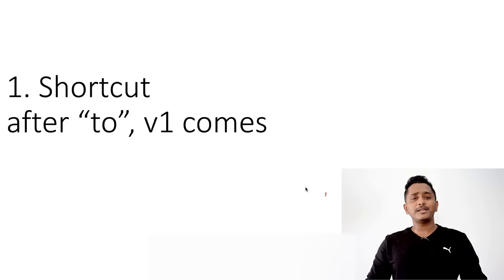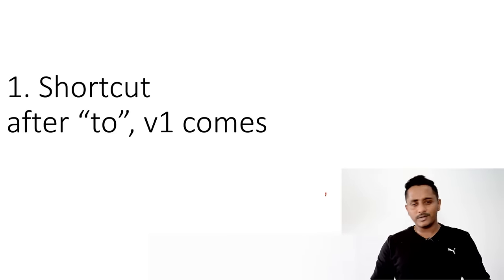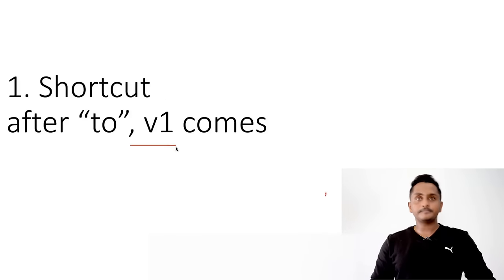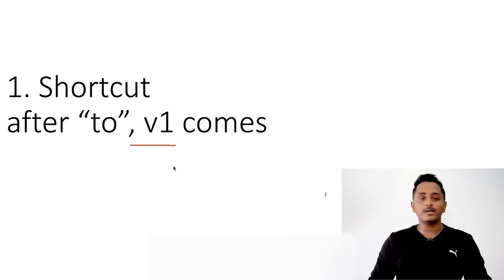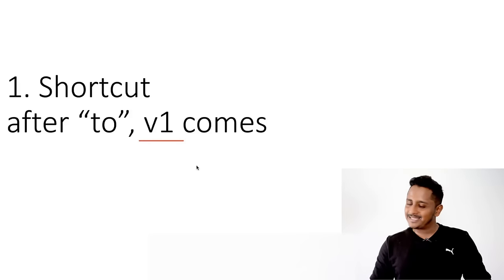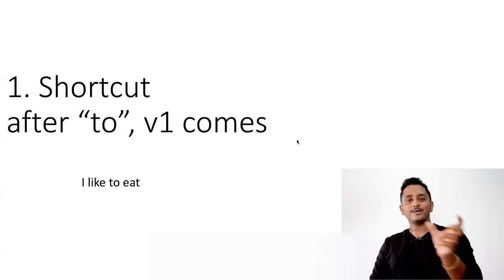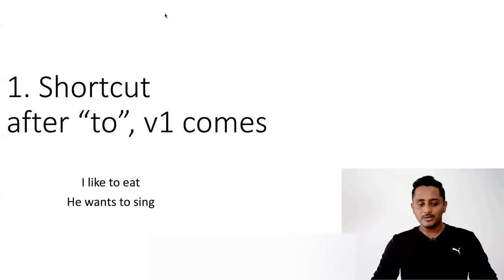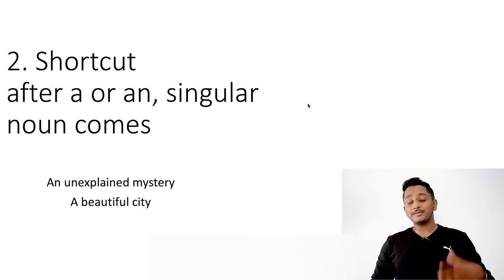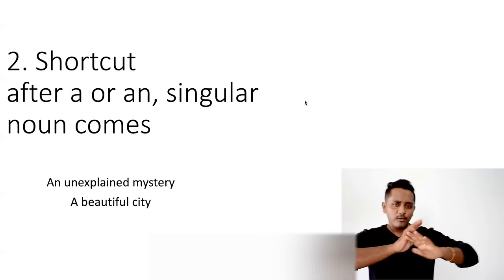I've made many grammar videos — just type 'Skills PTE grammar videos' and you'll get seven or eight. Shortcut number one: after 'to', only the base form of the verb comes. 'I want to eat,' 'I want to sing,' 'he wants to sing.' After 'to', -ing will not usually come, past tense will not come — only verb one. This applies even for reading fill in the blank.